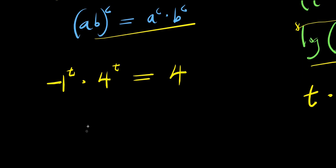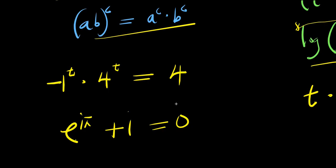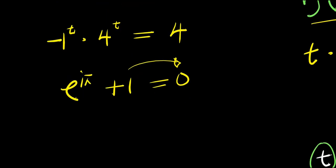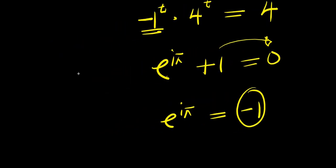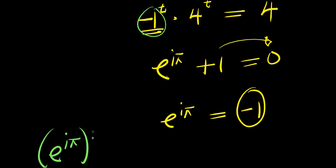Now let's consider Euler's identity: e to the power of i times pi plus 1 equals 0. Moving the 1 over, that means e to the power of i times pi equals negative 1. So negative 1 equals e to the power of i times pi. Since there is negative 1 here, instead of writing negative 1, I'm going to have e to the power of i times pi, raised to the power of t, times 4 to the power of t, and this equals 4.